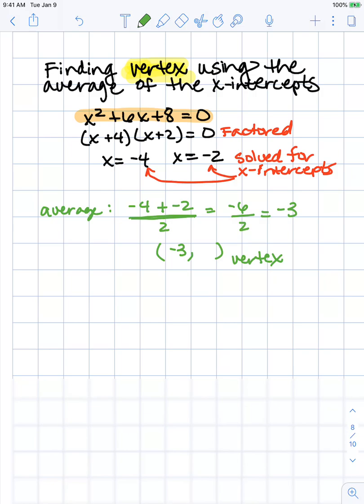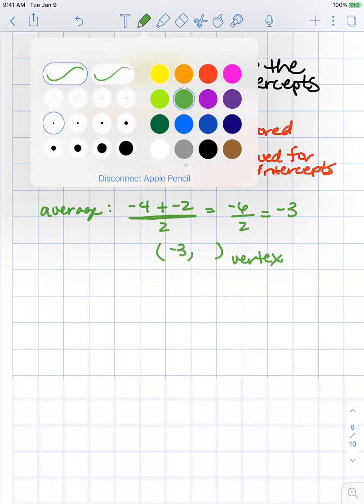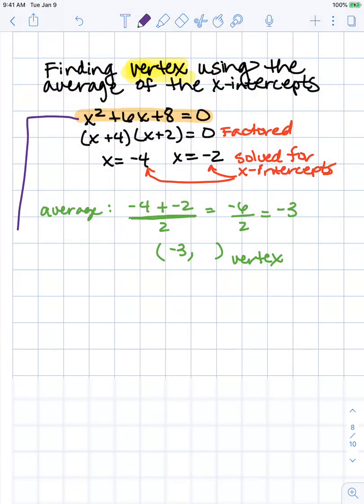To find my y-value, I'm going to take my equation and rewrite it as y = x² + 6x + 8, and I'm going to plug in -3 for x because this is my x-value.